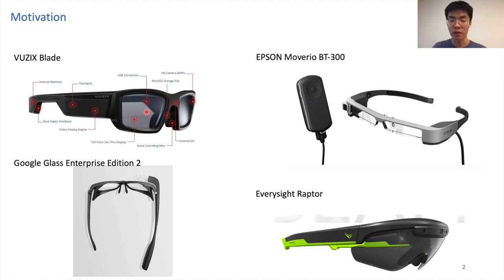However, the interaction scheme of state-of-the-art smart eyewear is mostly relying on touchpad. Unlike smartphones and smartwatches, where touch-based interaction only requires finger tapping, to interact with a glass-mounted touchpad, a user needs to raise his or her arm to reach to the touchpad.